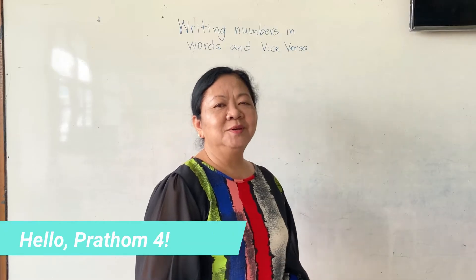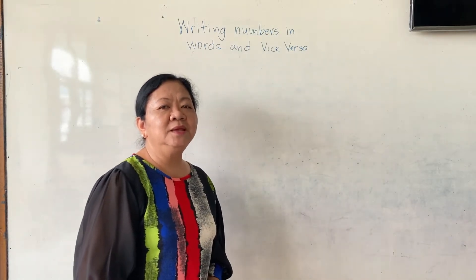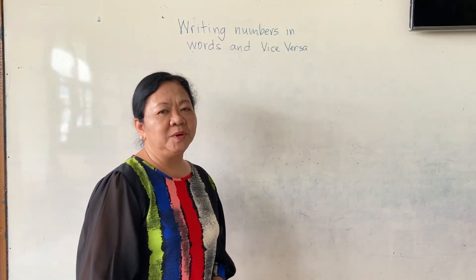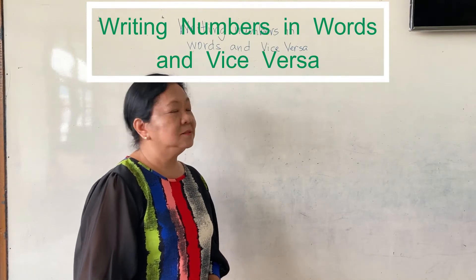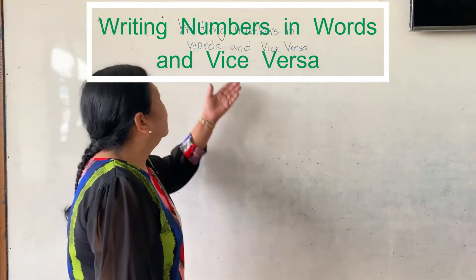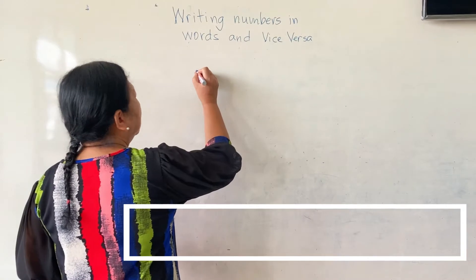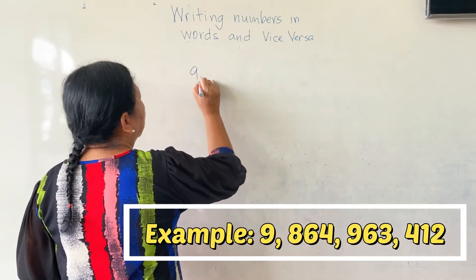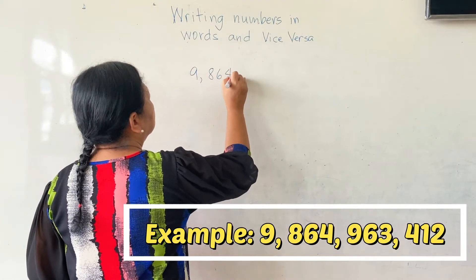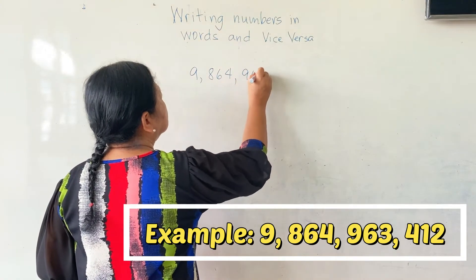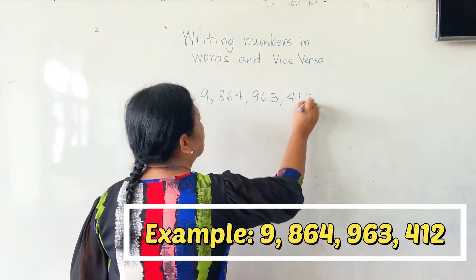Hello, and welcome. Today, you will continue studying reading numbers in English and writing them in Arabic numerals. Here is an example: we have 9,864,963,412.